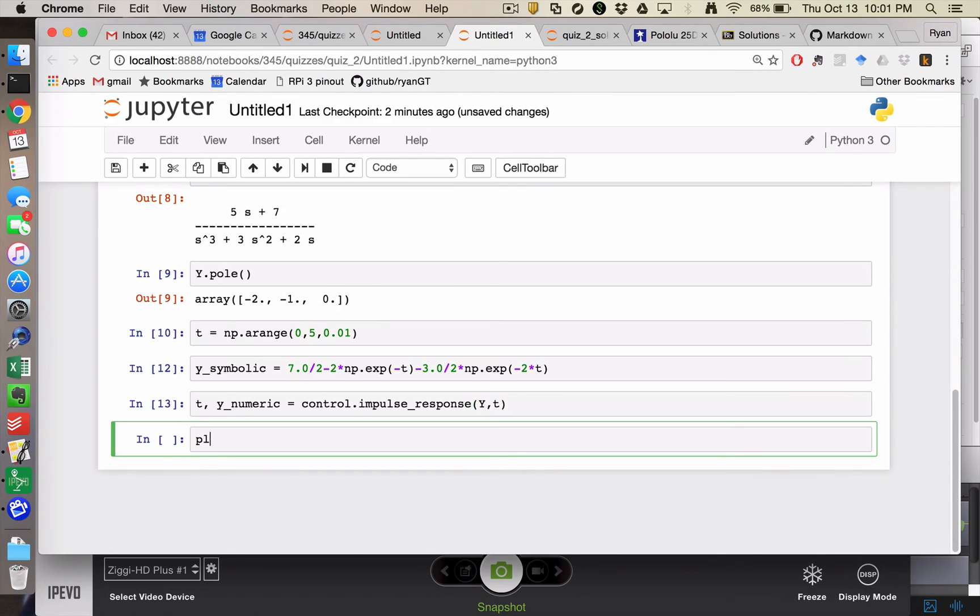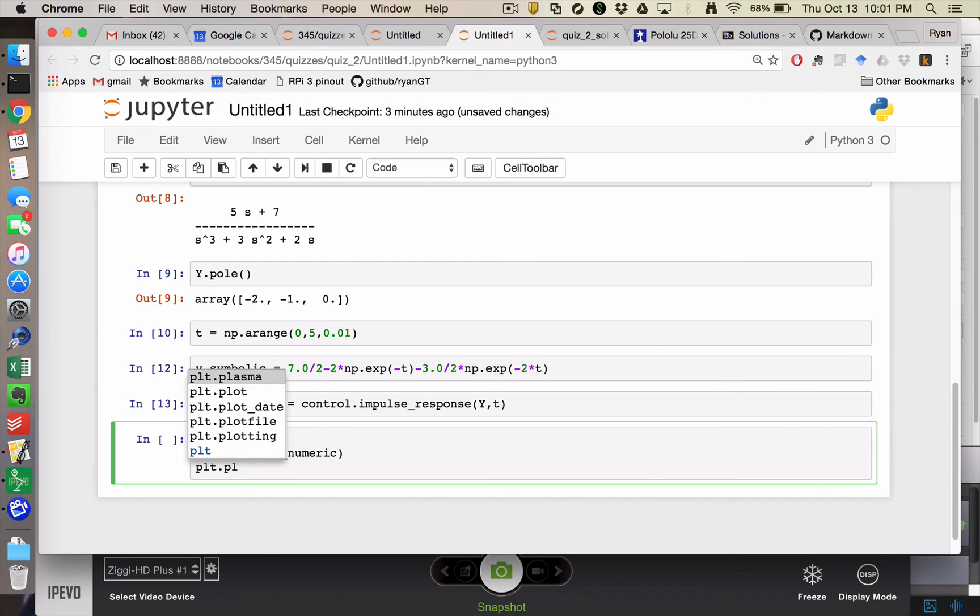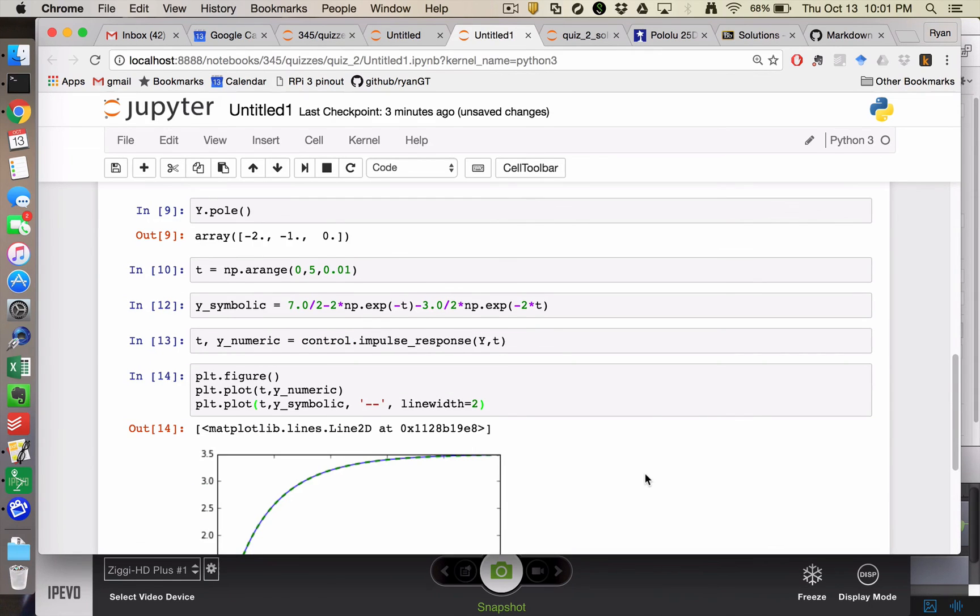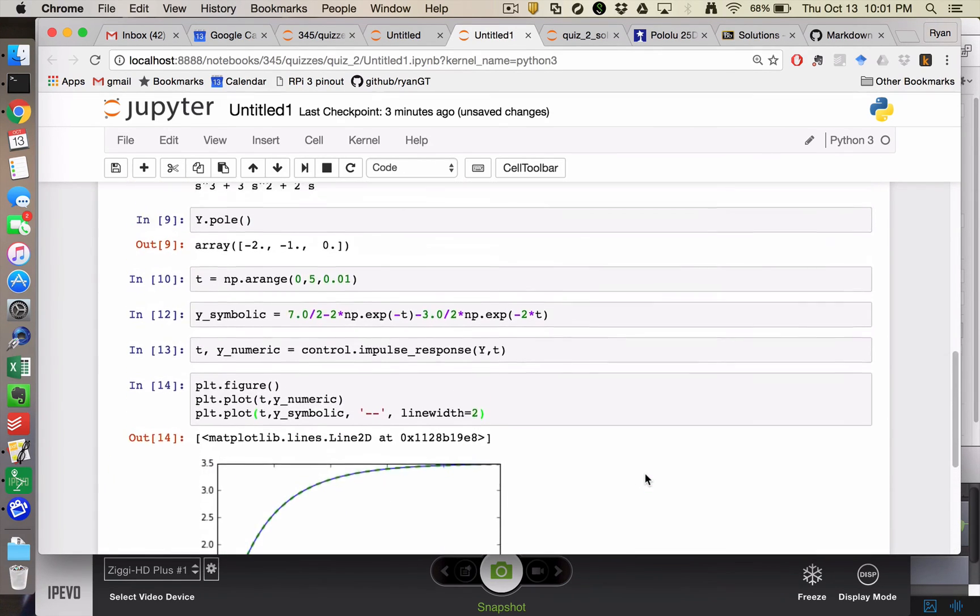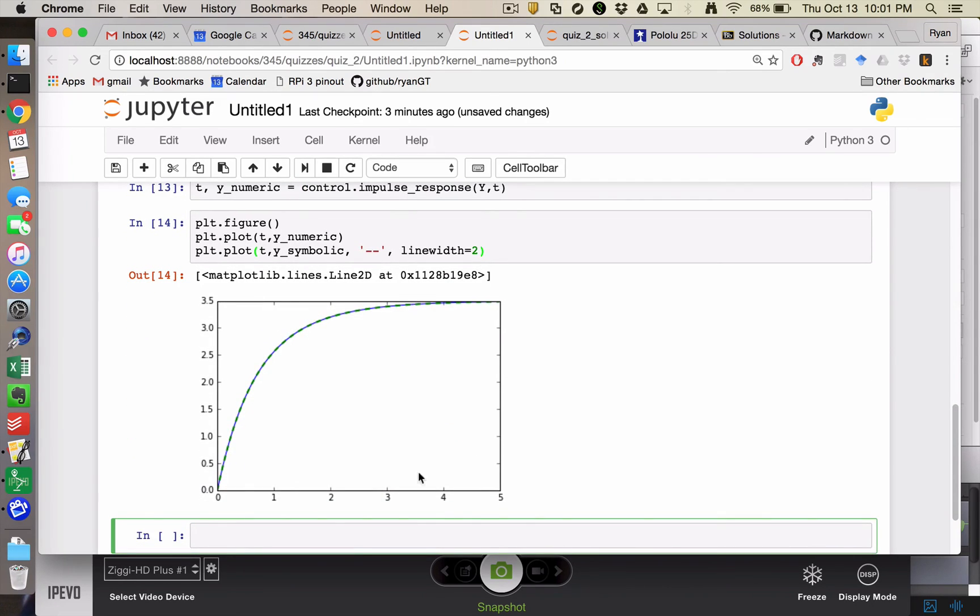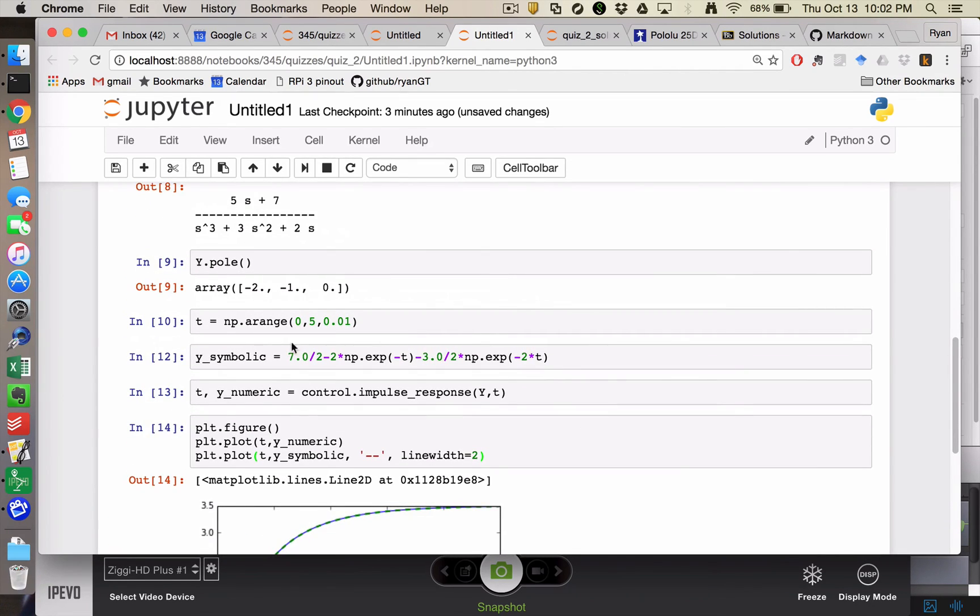And the verification would be to plot those. So t comma y numeric and then t comma y symbolic and I want that one to be dashed and thicker. And so my choice of t final doesn't seem too bad. I kind of got lucky on that one. And it seems like those two lines are directly on top of one another.